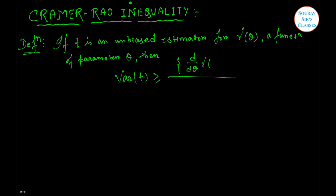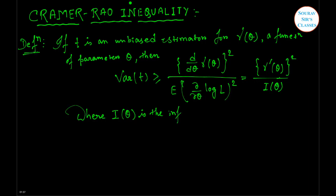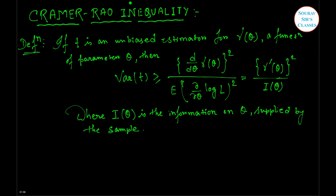...d by d-theta of gamma(theta), whole square, divided by E of [del/del-theta of log L, whole square]. This equals gamma-dash(theta) whole square divided by I(theta), where I(theta) is the information on theta supplied by the sample. So here is the definition of Cramér-Rao inequality.